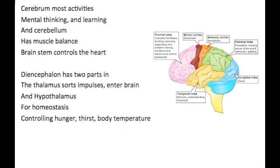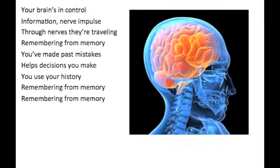Your brain's in control, in formation, nerve impulse through nerves they're traveling. Remembering, remembering — you've made past mistakes, helps decisions you make. You use your history. Remembering, remembering.